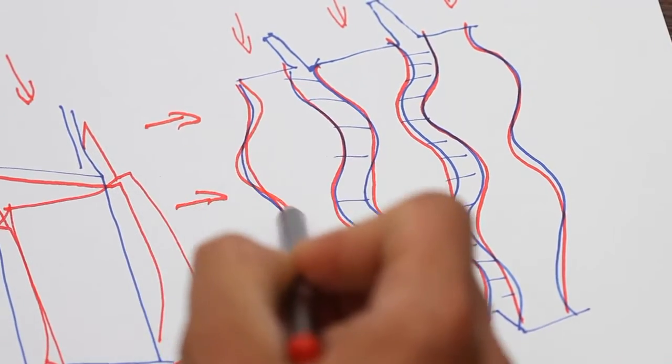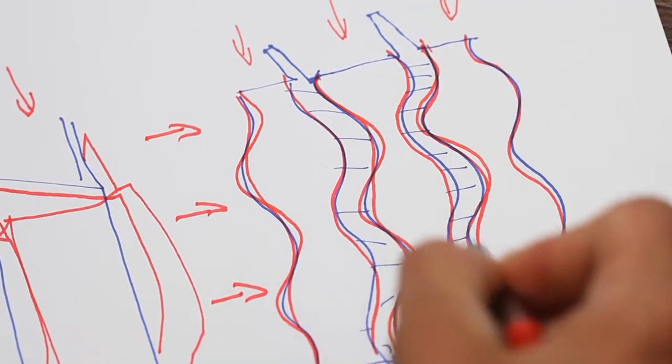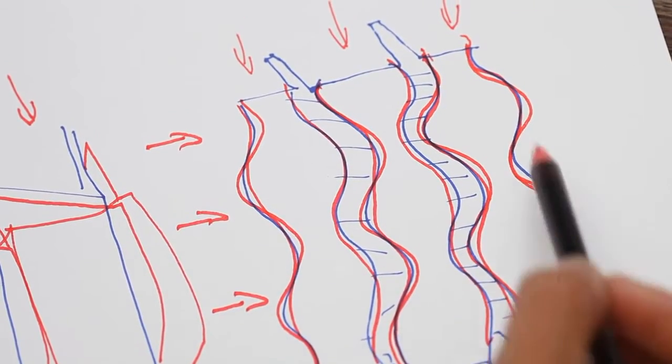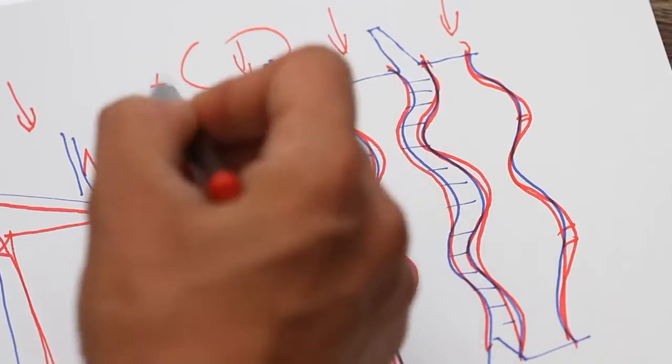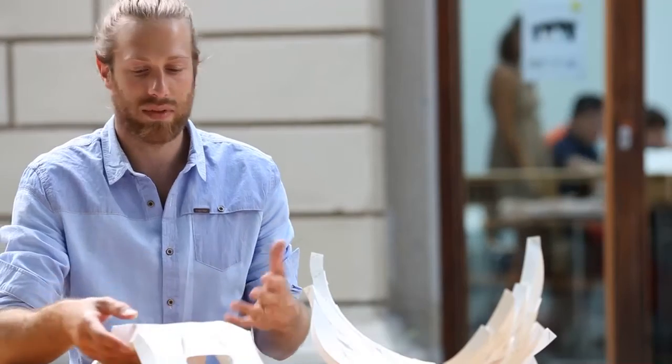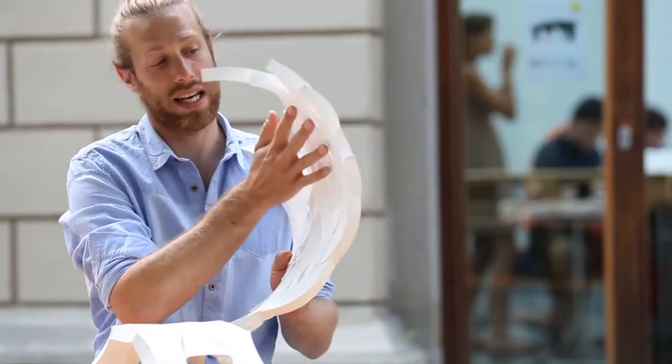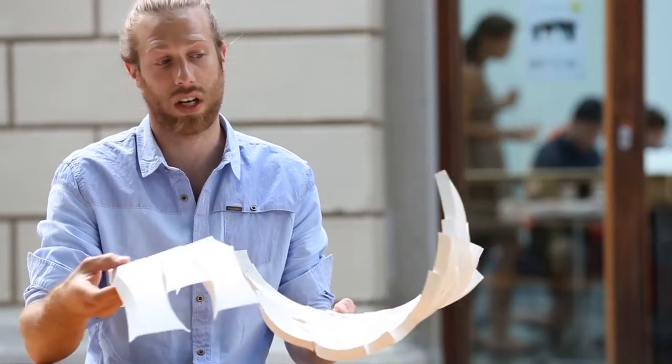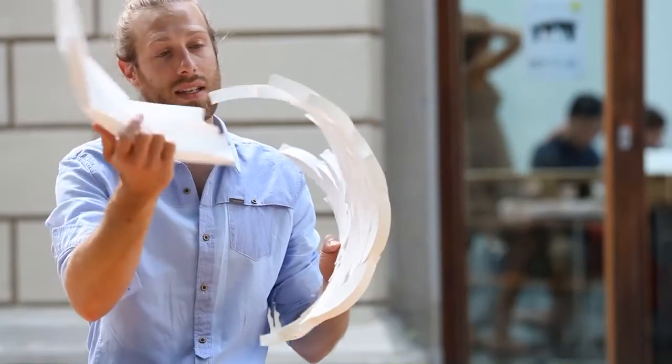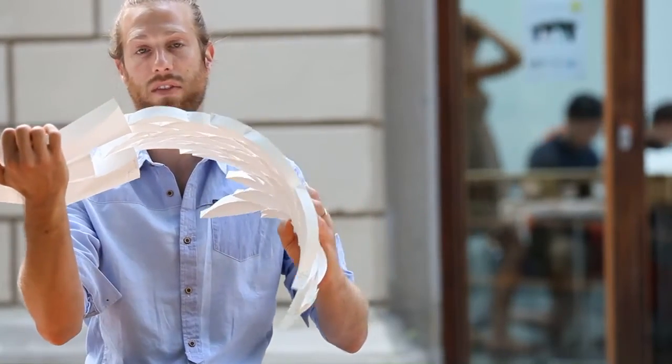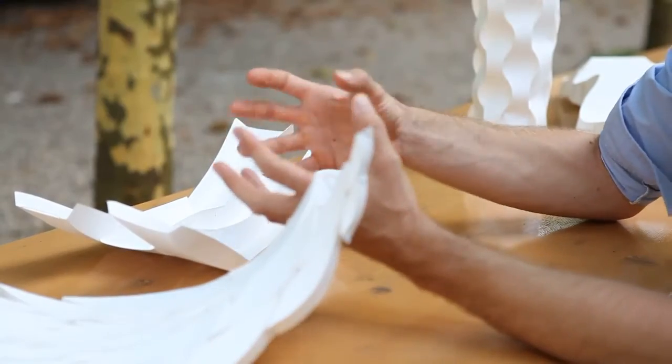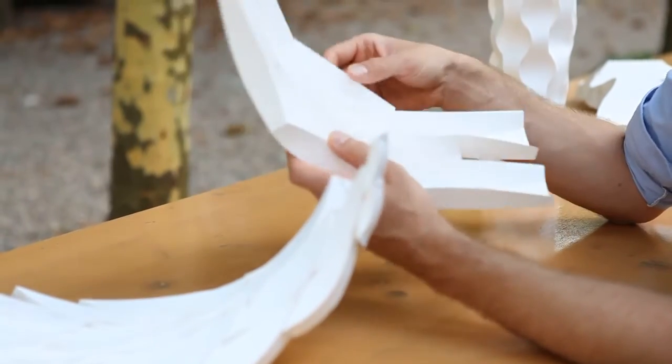Now the curved folds are a combination of both these systems and when they're fixed and constrained become very rigid in both directions. We've come up with a number of systems where we can achieve negative curvature and positive curvature, potentially blending between those different curvatures to create the double curvature of the pavilion.